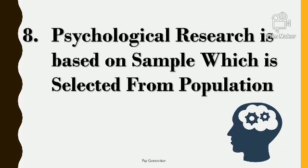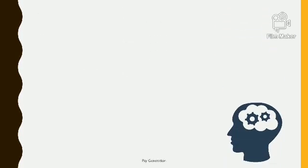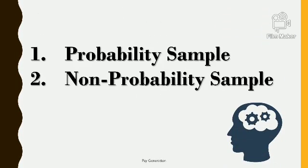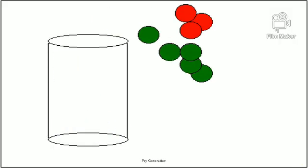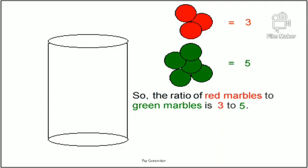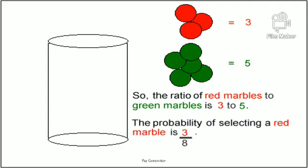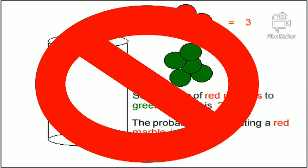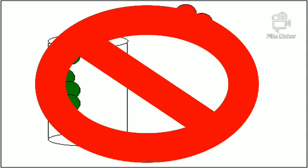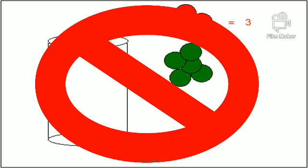Eighth, psychological research is based on a sample selected from a population. There are two types of samples. First is probability sample — probability sample mein population ke har ek person ka sample mein select kiye jaane ki sambhavna pata hoti hai, matlab pata hota hai ki is population mein se kitne logon ka selection kiya jana hai. Second is non-probability sample — non-probability sample mein is tarah ki koi bhi sambhavna nahi pata hoti — yeh nahi pata hota ki kitne logon ko sample mein select kiya jayega.